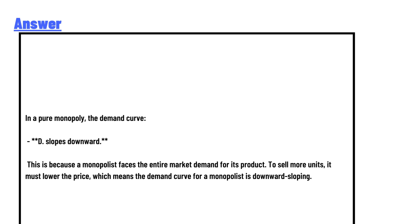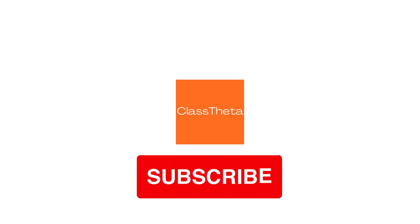In a pure monopoly, the demand curve slopes downward. This is because a monopolist faces the entire market demand for its product. To sell more units, it must lower the price, which means the demand curve for a monopolist is downward sloping. This is the correct answer.